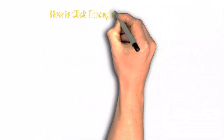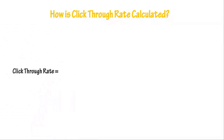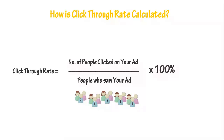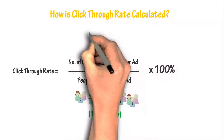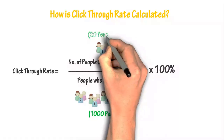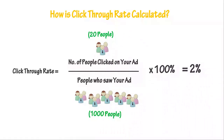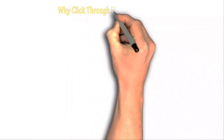How is click-through rate calculated? Click-through rate is calculated by dividing the number of people that actually clicked on your ad by the number of people that actually saw your ad, and then multiplying it by 100%. For example, let's say 1,000 people saw your ad and only 20 people clicked on it — your click-through rate calculation would be 20 divided by 1,000 multiplied by 100%.